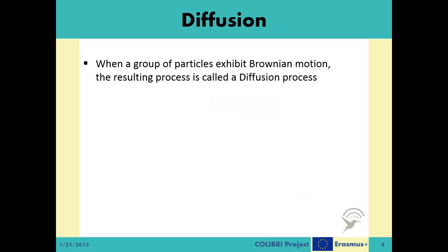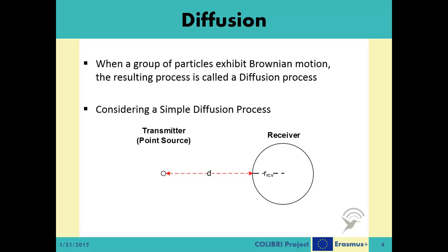While the movement of a single particle as described is called the Brownian motion and is modeled by the Wiener process, when we consider the collective movement of a group of particles each exhibiting Brownian motion, the resulting process is called a diffusion process. There can be numerous scenarios for diffusion. A simple diffusion scenario can be defined between a single point source and a single receiver. The environment is 3D, the receiver is not moving, and collisions among the moving objects are ignored. Lowercase d is the distance between the source and the receiver, r_rcv defines the radius of the spherical receiver, and capital N defines the number of moving objects released from the source at one instance. Hereafter, we will refer to the moving objects as messenger molecules, or MMs for short, and the point source will be called the transmitter.